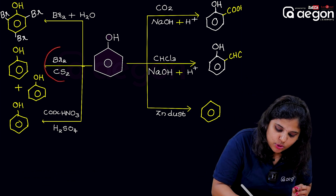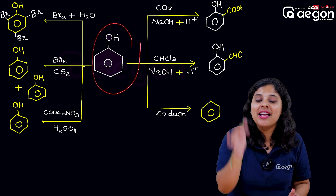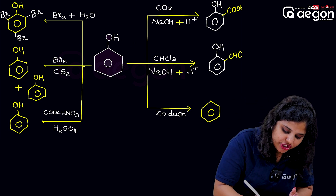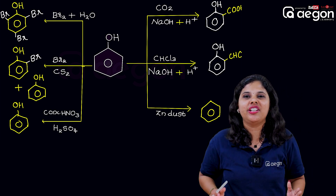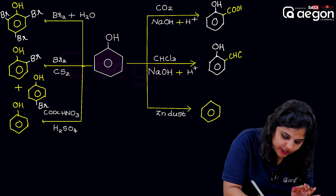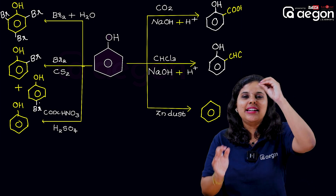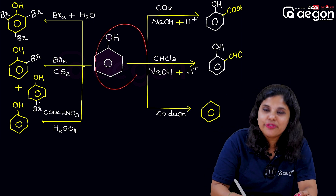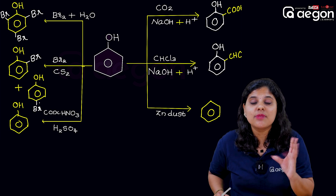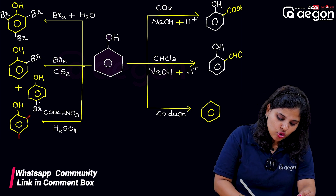Next one: reaction with bromine and carbon disulfide. Bromine and carbon disulfide react with phenol to give products. The product is phenol with 2, 4, 6 substitutions — you substitute at those positions.